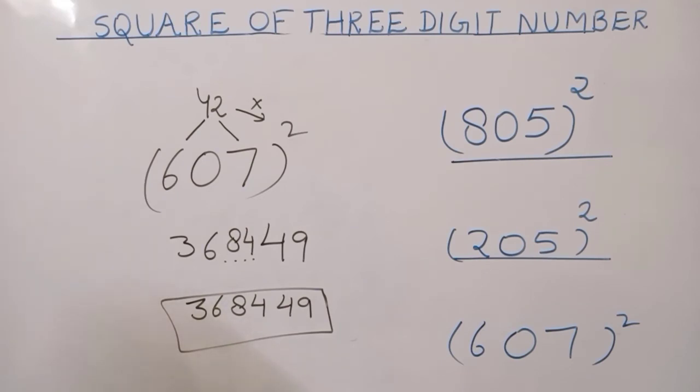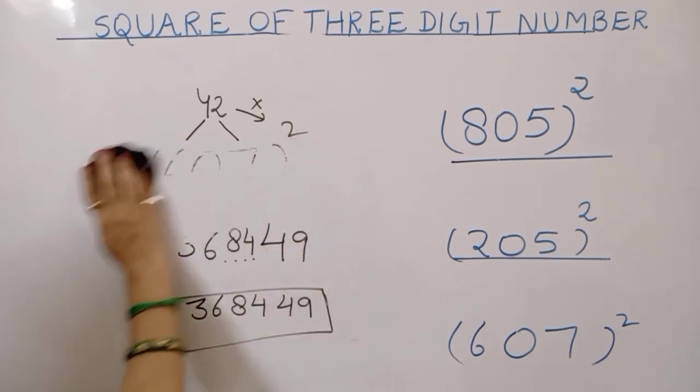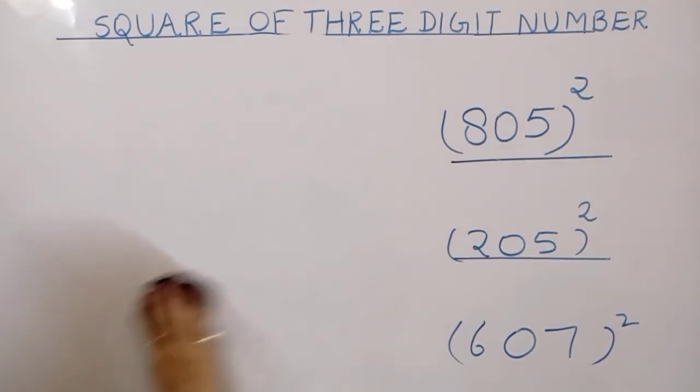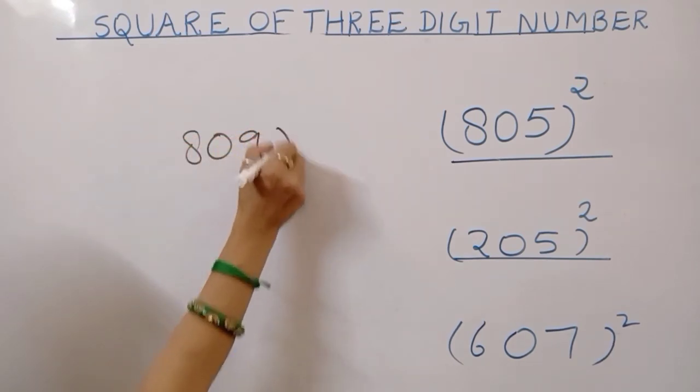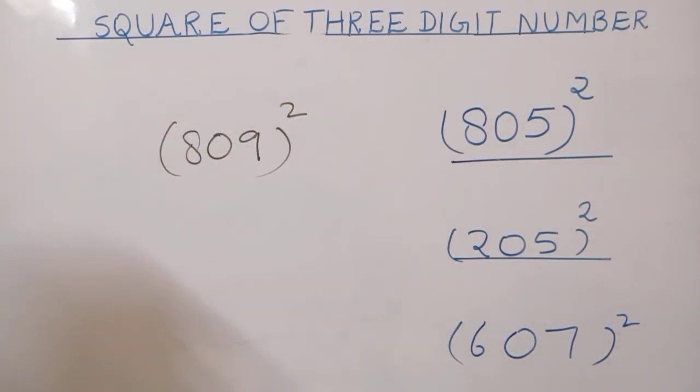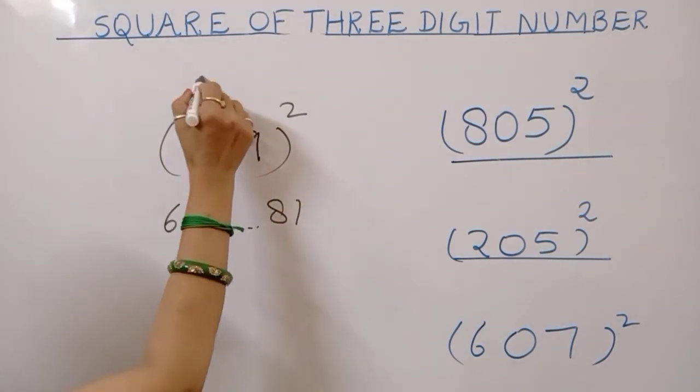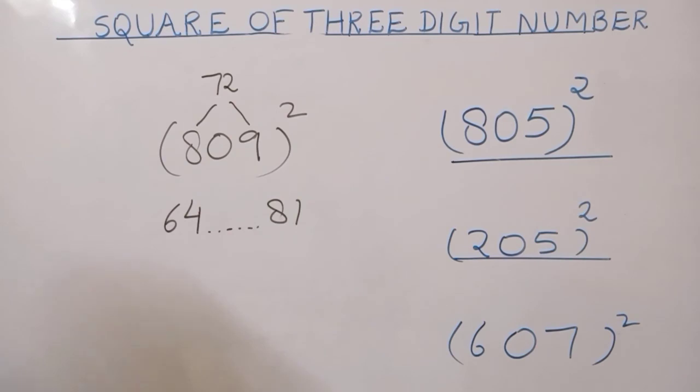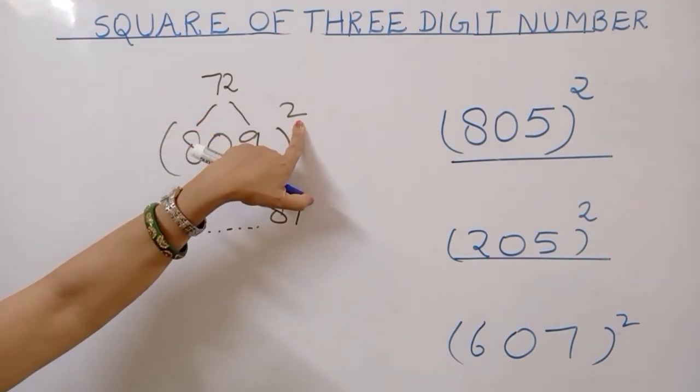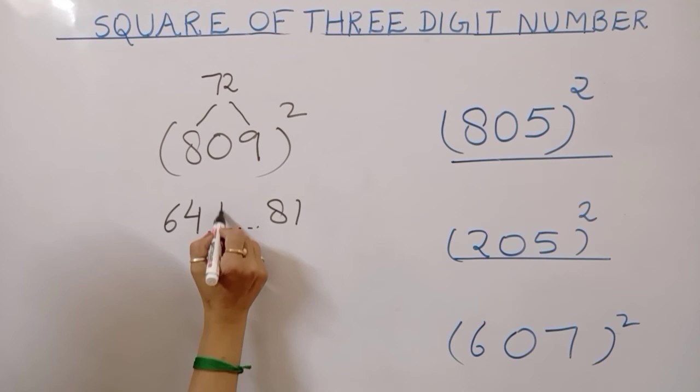One more question. I am explaining squaring of 809. Any number you can take. So, 9 square, 81. 8 square, 64. And now search for this number. What will you get? 8 multiply 9, 72. And 72 multiply with 2, 144.